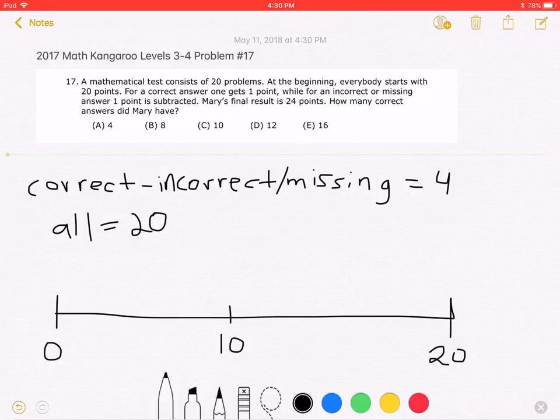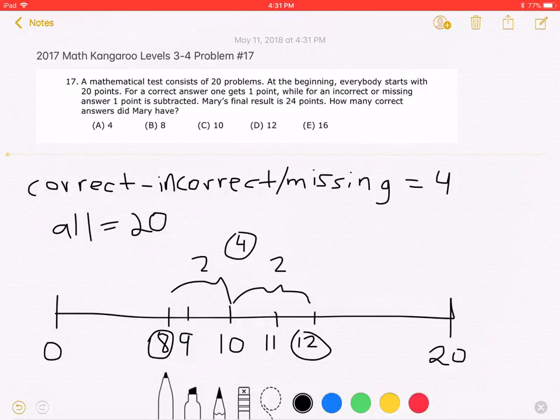However, because the difference is 4, we need to have something 2 less, or 8 incorrect answers, and 2 more than, or 12 correct answers. As you can see, the distance from here to here is 2 and the distance from here to here is also 2. So in total, the distance is 4 and that matches this 4 over here, which we already established.